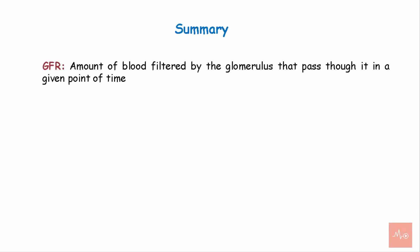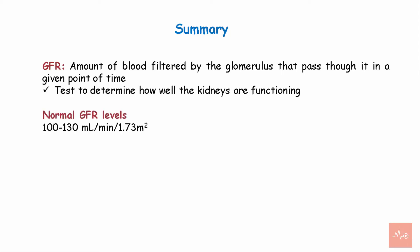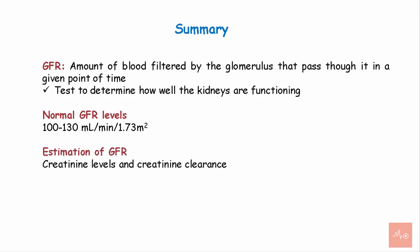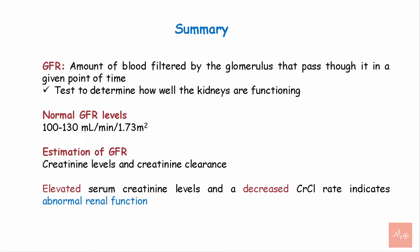To summarize: Glomerular Filtration Rate is the amount of blood filtered by the glomerulus that passes through it in a given point of time. It is a test to determine how well the kidneys are functioning. Normal GFR is 100–130 ml per minute per 1.73 m². Estimation of GFR is performed by calculating creatinine levels and creatinine clearance. Elevated creatinine levels and decreased creatinine clearance indicate that abnormal renal function is present.